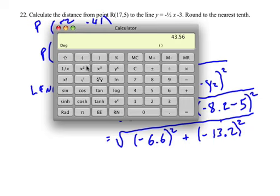So 6.6 squared comes out to be positive 43.56. We're going to add 43.56 plus, in brackets, 13.2, and it's negative and we're squaring it. Close the bracket, equals.